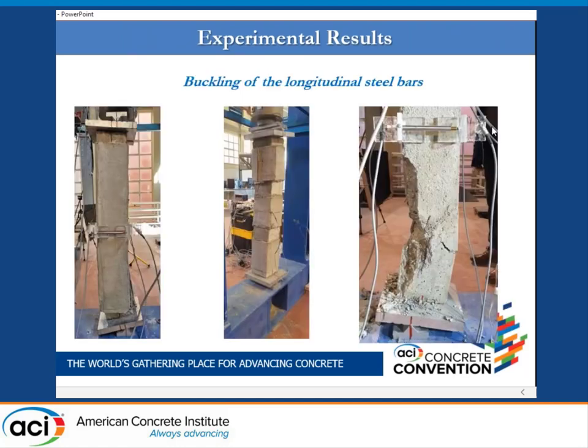The failure of the column was due to crushing of the concrete with buckling of the longitudinal steel bars, at the end of the test region — either at the bottom or at the top. The failure configurations of the tested columns are illustrated in the figure.